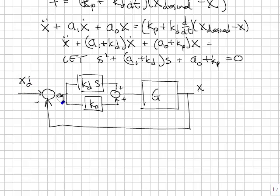That value then is xd minus x, and we have the proportional part of that and the derivative part of that fed into the input of g.